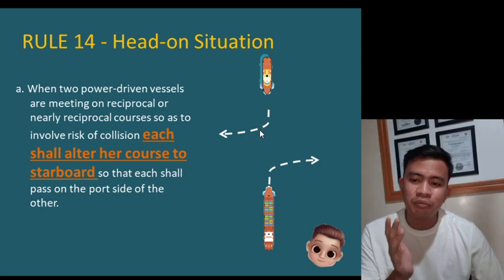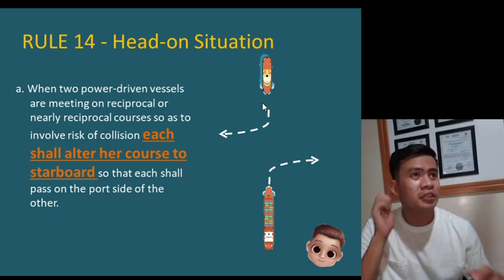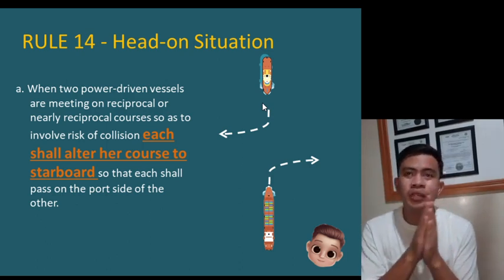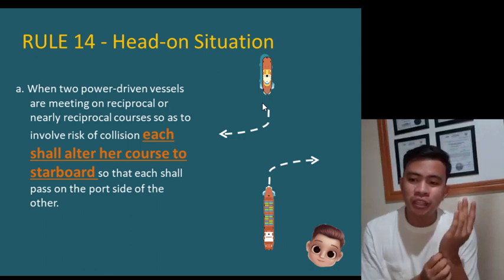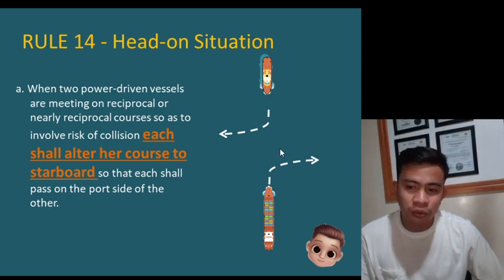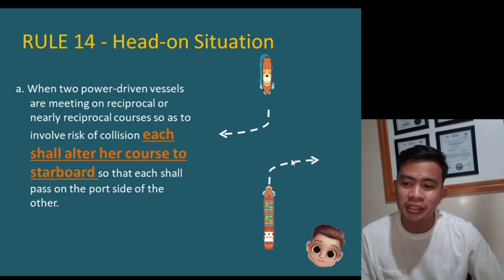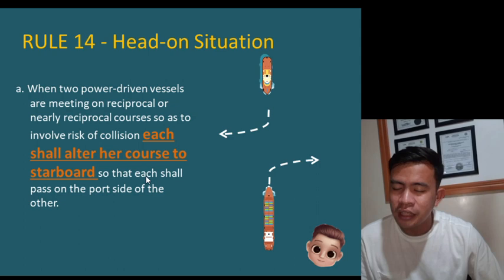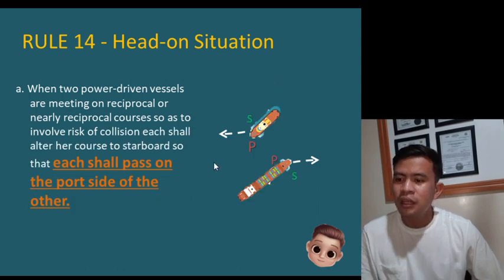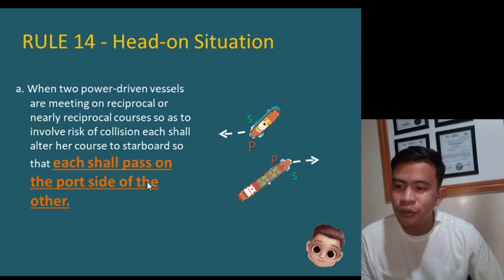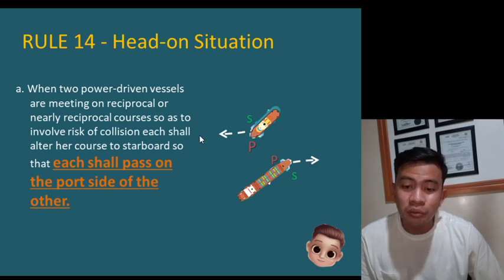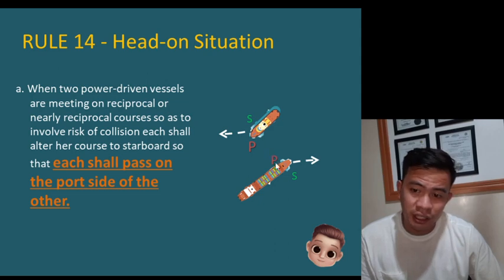If you notice, when both vessels alter course to the starboard side they will pass clear of each other. When meeting, the automatic move should be to both alter course to starboard — this should be the understood action so it does not create any dangerous situation. Take note: if one vessel alters course to the port side instead, they risk collision. Each shall pass on the port side of the other.